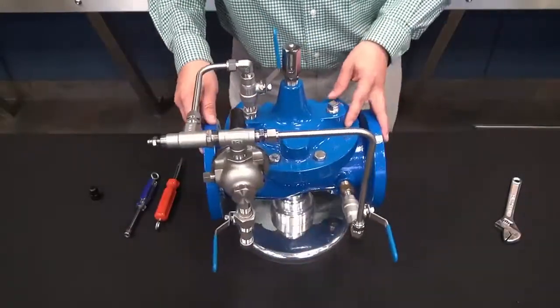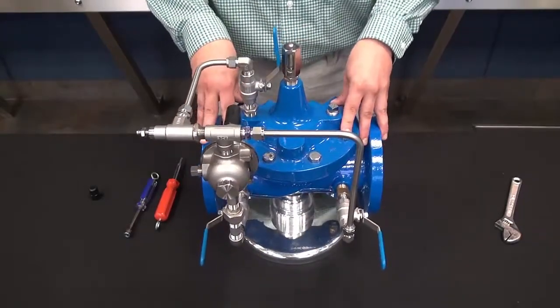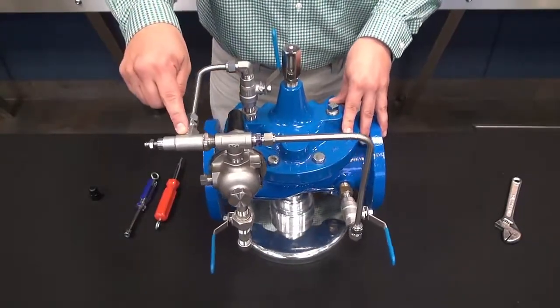So now we know that we have confirmed the setting on the pressure reducing pilot. Now we'll get to the speed control, the CV.